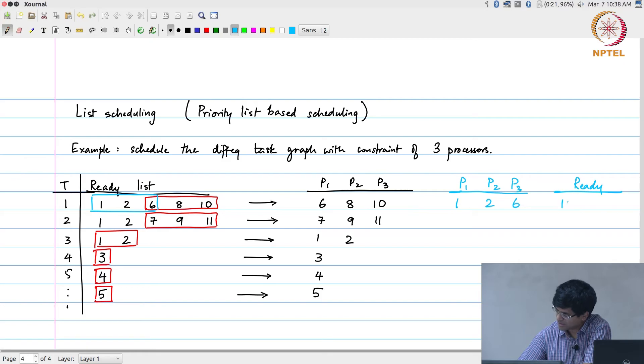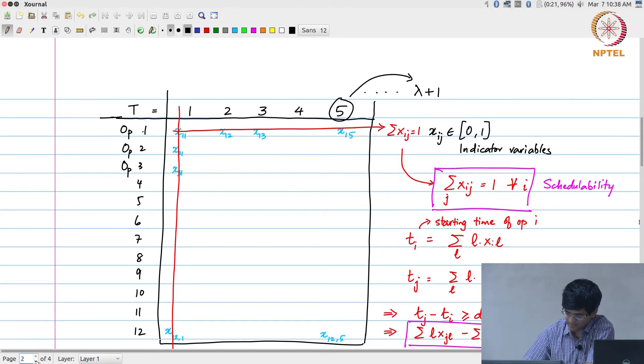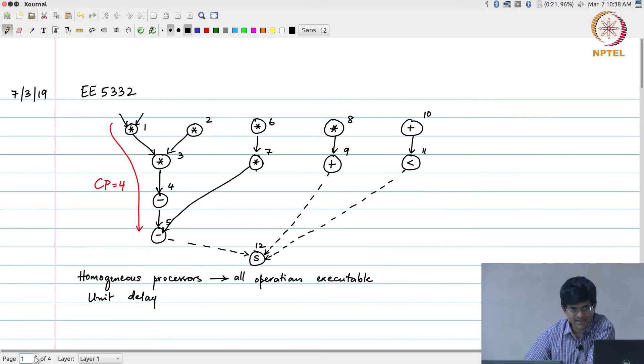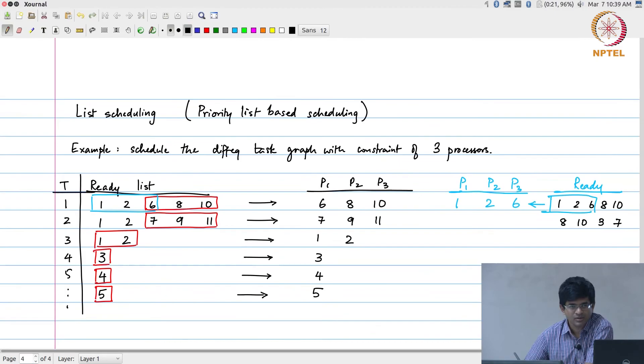To start with, 1, 2, 6, 8, 10 would be ready. What I would do in this case is that I would pick these 3 and put them here. In the next time step what I would have is 8 and 10 are ready, but in addition to that, because 1 and 2 have executed, 3 also becomes ready, and because 6 has executed, 7 also becomes ready. Once again keeping the critical path in mind, probably what I should do is pick these 3, and 7 at least I need to make sure get scheduled because those are the ones that have other things depending on them.